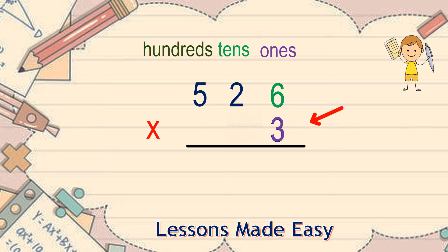Here we have 6 times 3, which is 18. And 18 is a two-digit number, but we can keep only one digit for each place. So we keep 8 and carry over 1 to the tens place.